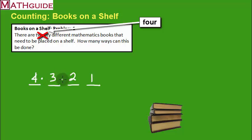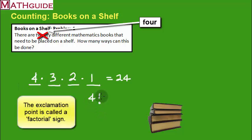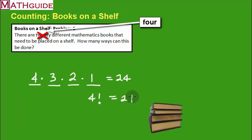Using the fundamental counting principle, we multiply: 4 times 3 times 2 times 1 equals 24 different ways. You may recognize that 4 × 3 × 2 × 1 is really just 4 factorial. So in the future when I do problems like this, I'll just compute 4 factorial with a calculator.